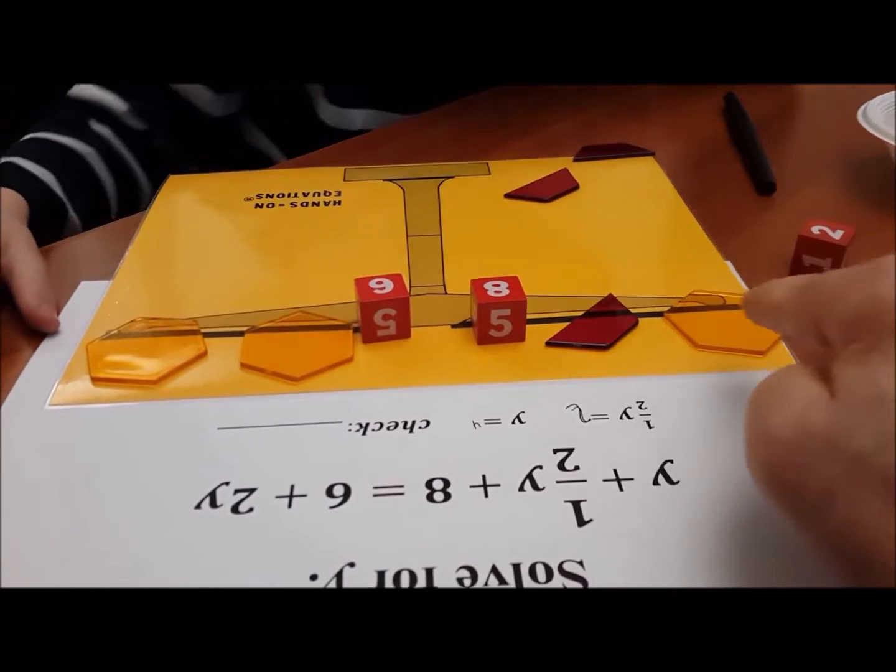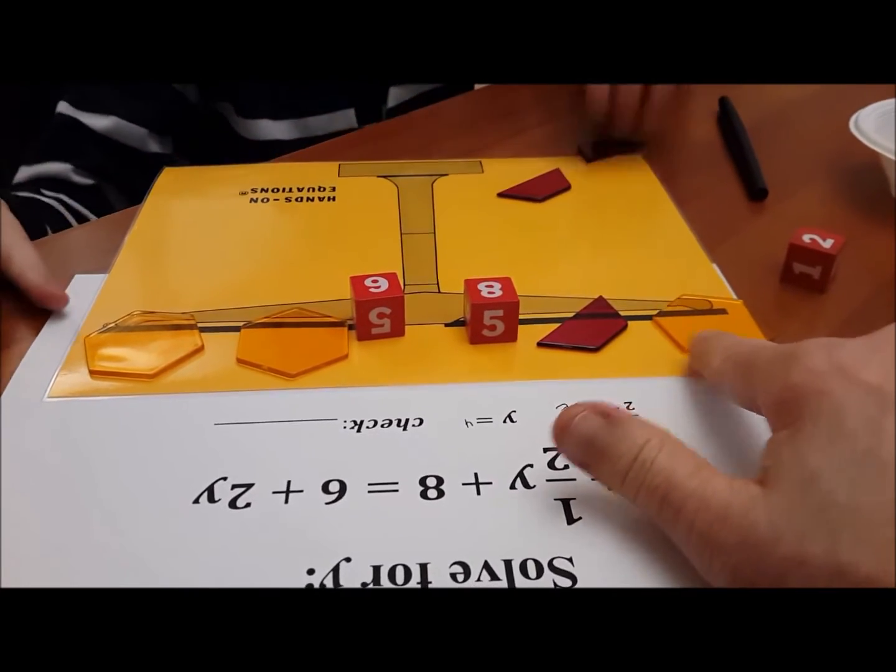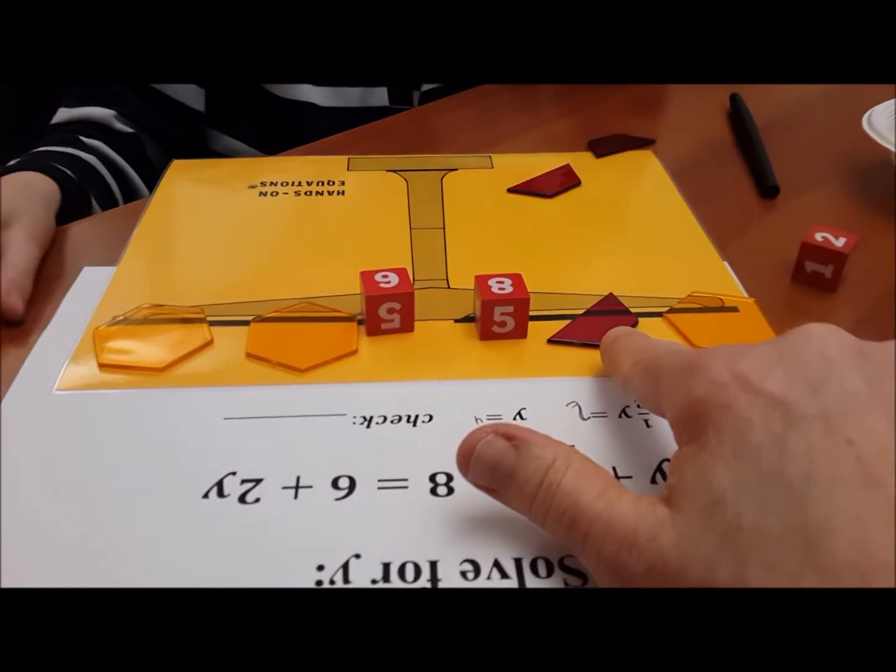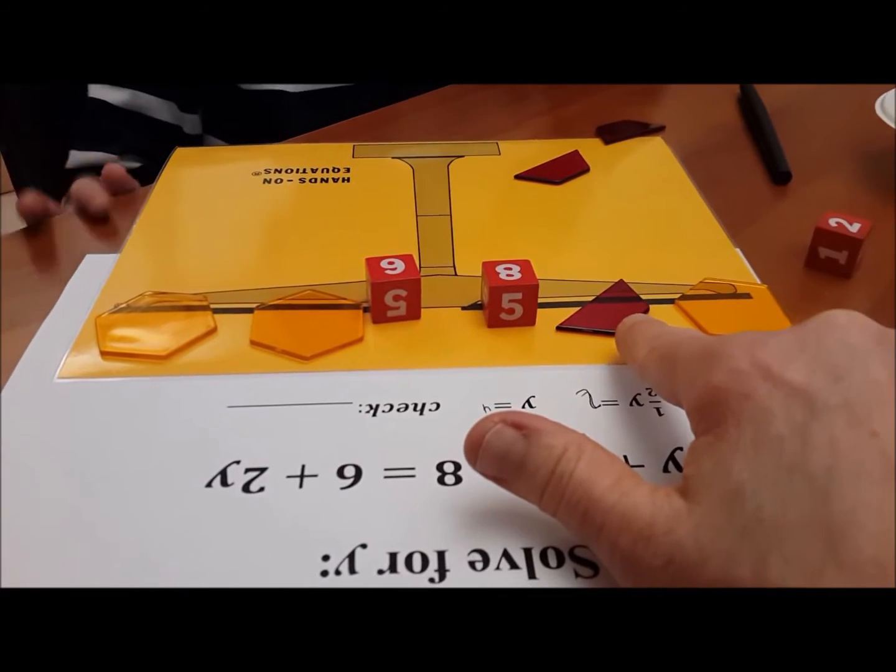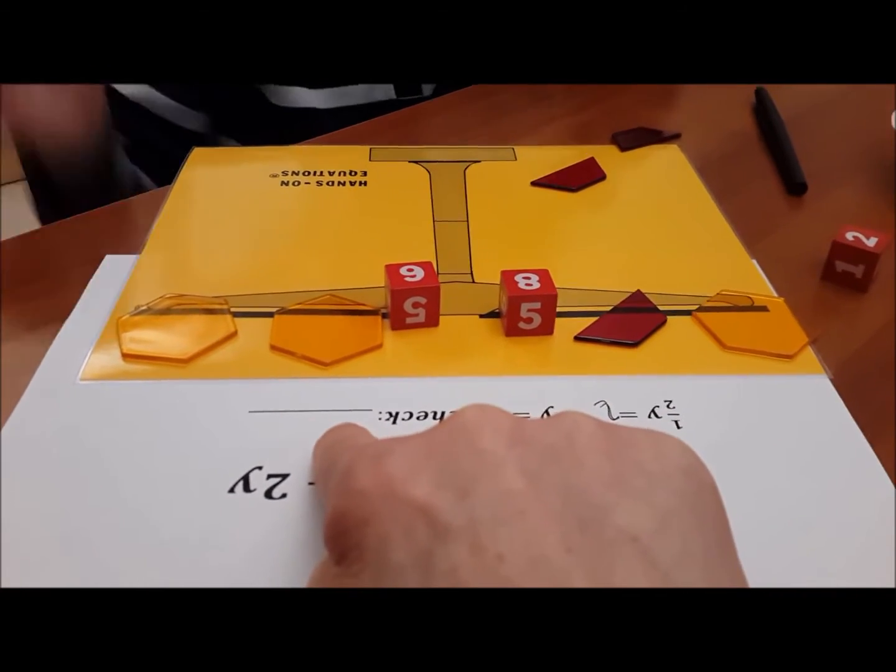So how much is this side? Count. Four. This one is how much? Fourteen. Fourteen. Fourteen? Four and two is six and eight is fourteen. Okay, over here write fourteen please.